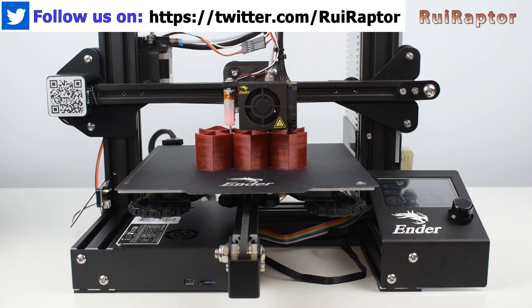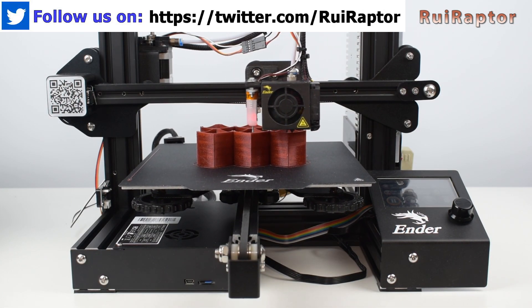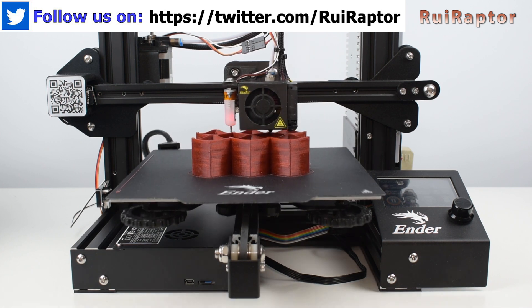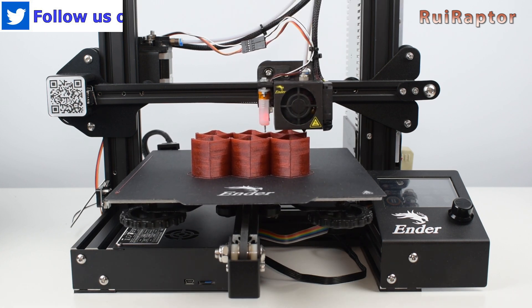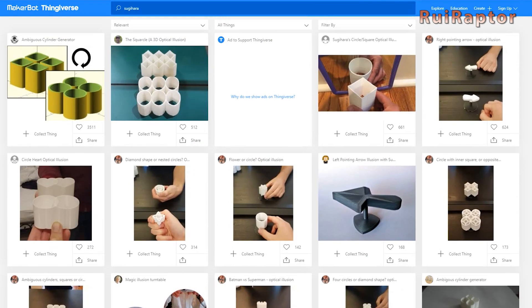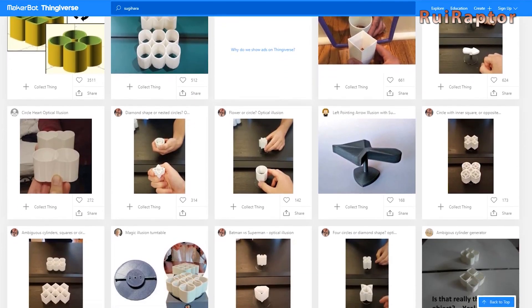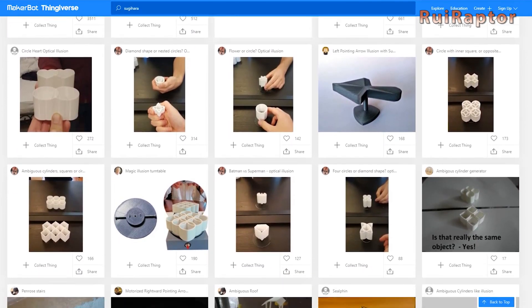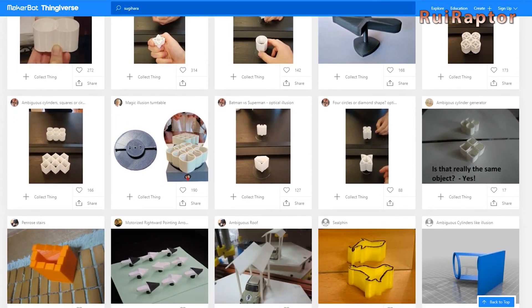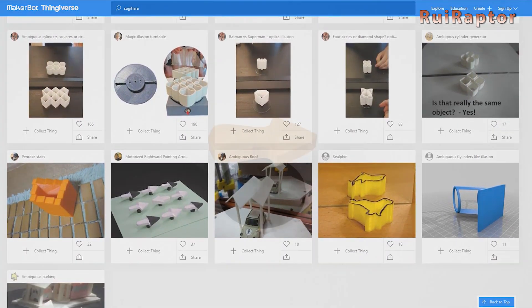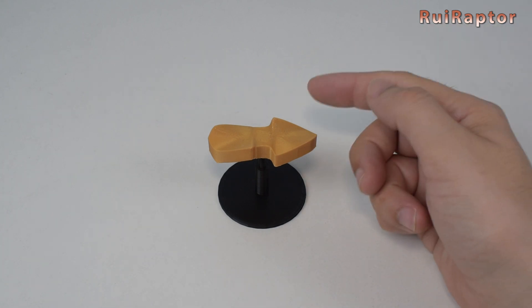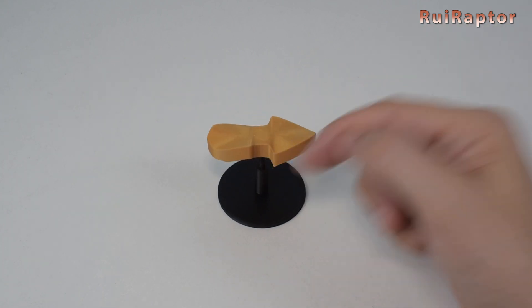Japanese mathematician Kokichi Sugihara was also known for his optical illusions. He has several three-dimensional creations that seem to defy reality. Based on his illusions, there are several models available online, and we selected a few to print. The first is this arrow that always seems to be pointing to the same direction.